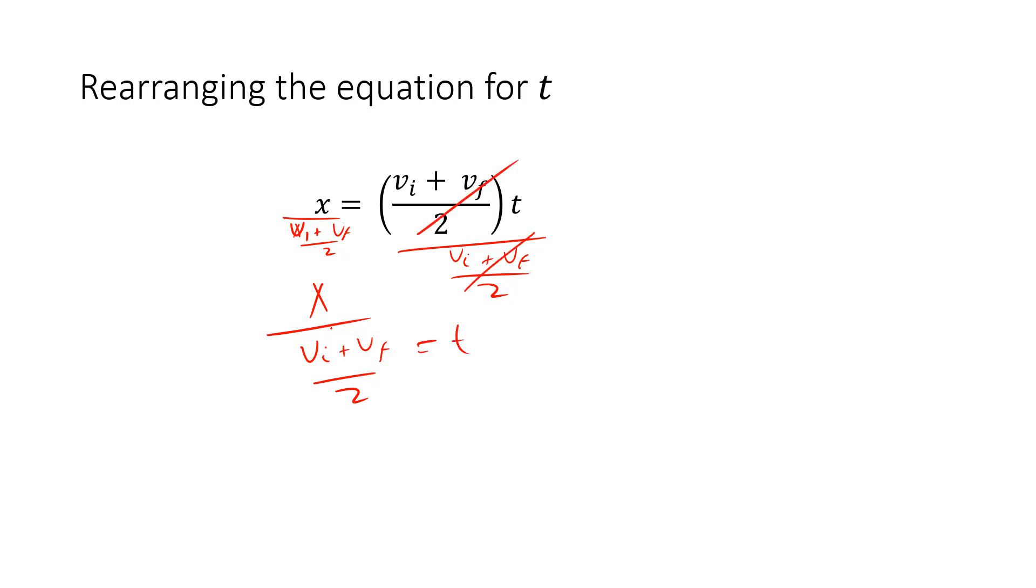And t is going to equal x over vi plus vf over 2. But sometimes this looks a little ugly. You could have multiplied both sides by 2 and got rid of that denominator in the first place. Might be prettier to look at. So 2x divided by vi plus vf equals t.